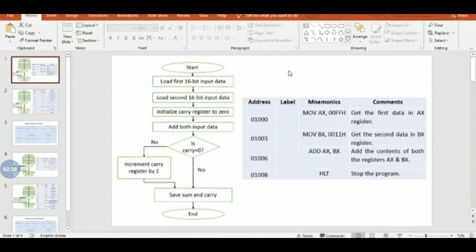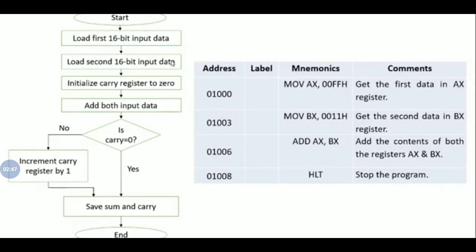For addition of two 16-bit numbers, we need two input registers to load the input data and one register for the carry, initialized to zero. We then add both input values. If a carry is generated, the carry register is incremented. Finally, the sum and the carry are stored at specific memory locations.